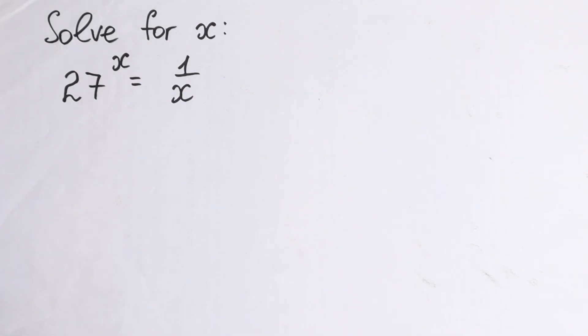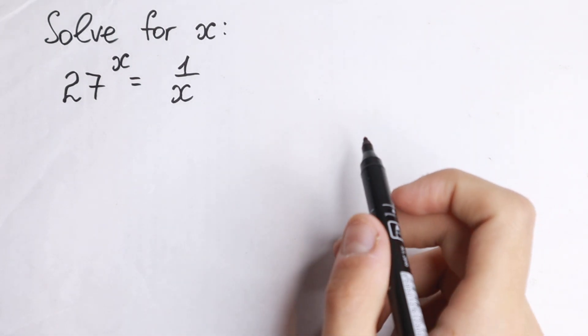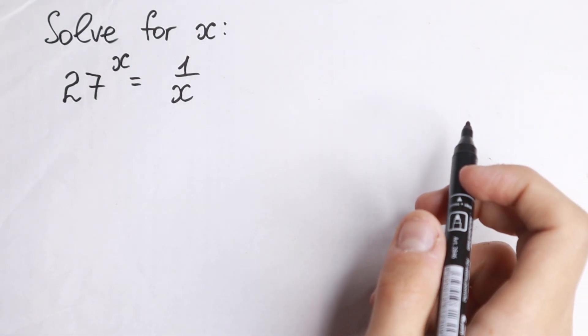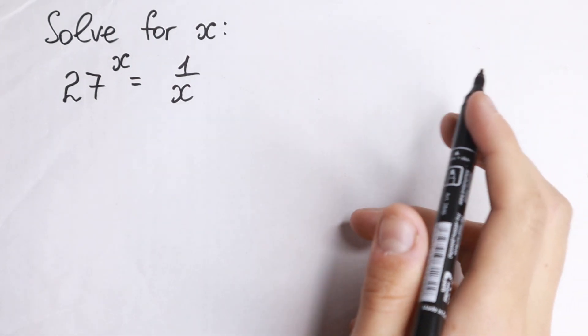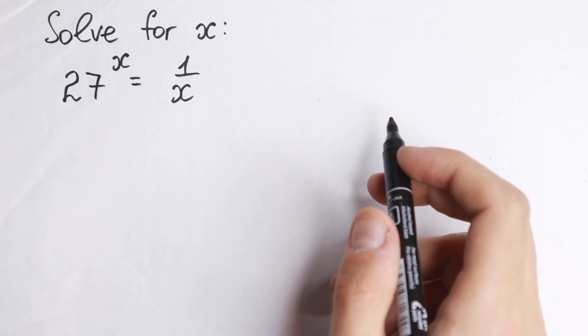Hello everyone, welcome back to MathMod. We have a really interesting exponential equation today: 27 to the x equals 1 over x, and we need to find x in this interesting exponential equation.